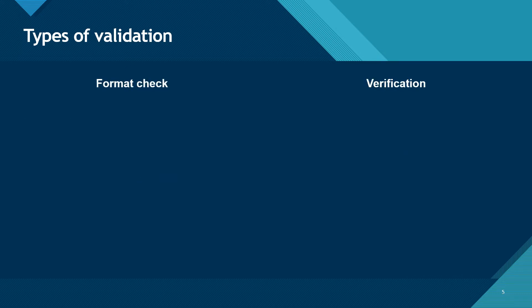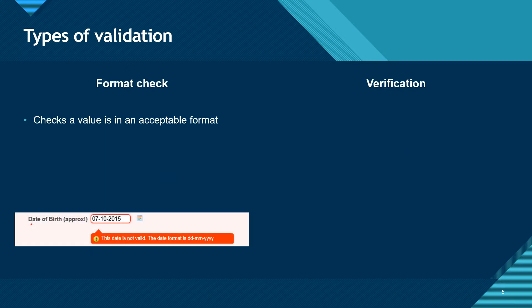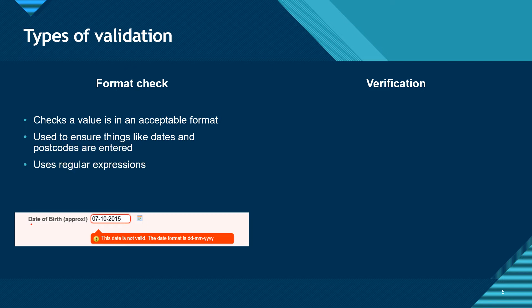A format check checks that the user has entered a value in an acceptable format. It's particularly useful for things like dates and postcodes, but can also check things like emails to make sure that they contain an at symbol and a dot. We can use regular expressions to implement more complex format checks.